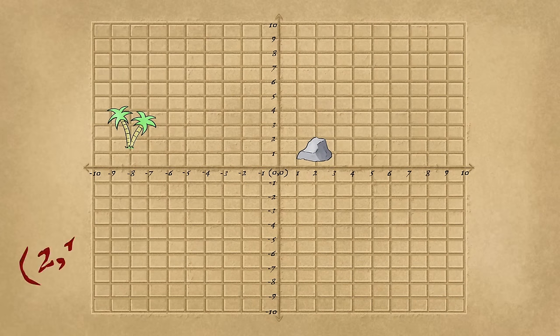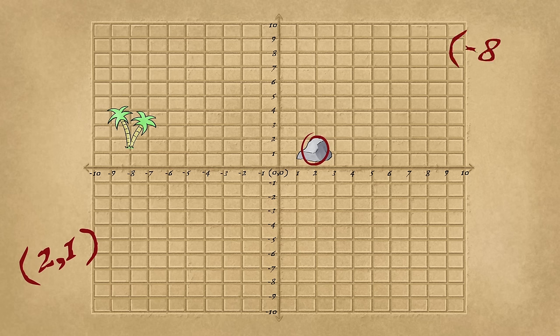To plot the coordinates 2, 1, go right 2, jump up 1, and you're done. To plot negative 8, positive 2, go left 8, up 2, that's what we do.